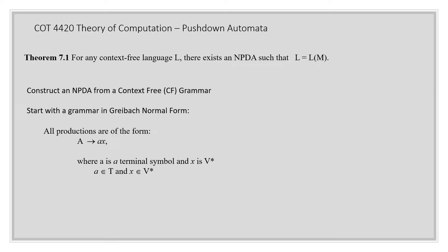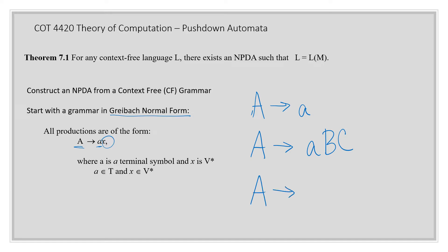We're going to construct NPDAs from Greibach normal form grammars. Greibach normal form grammars require all productions to be in a certain form. On the left-hand side, because it's context-free, it must have a single variable. On the right-hand side, it must have a single terminal. That single terminal can be by itself or followed by any number of variables. Productions in this form are okay, but productions like this are not okay.